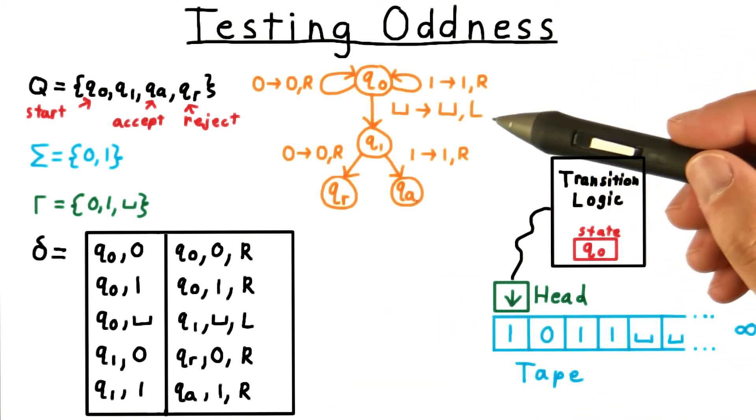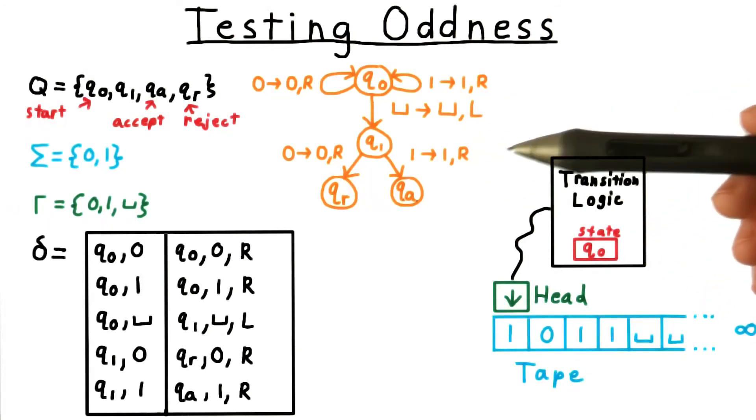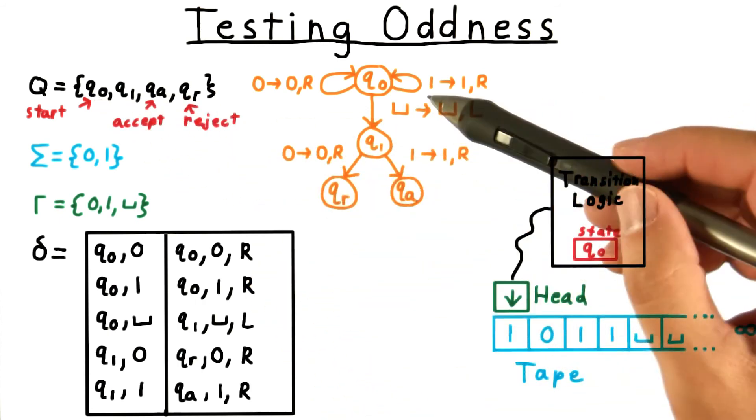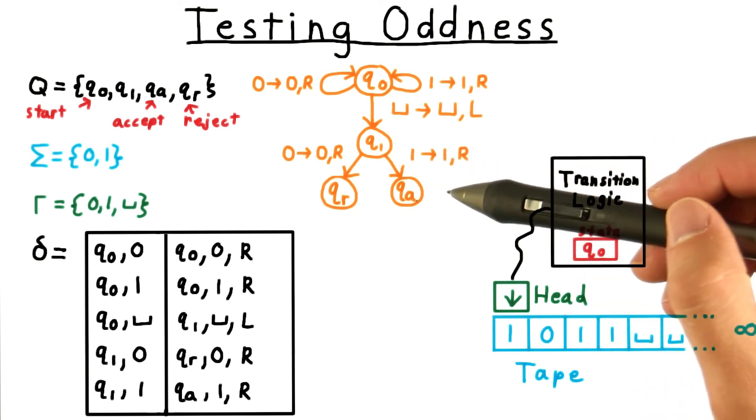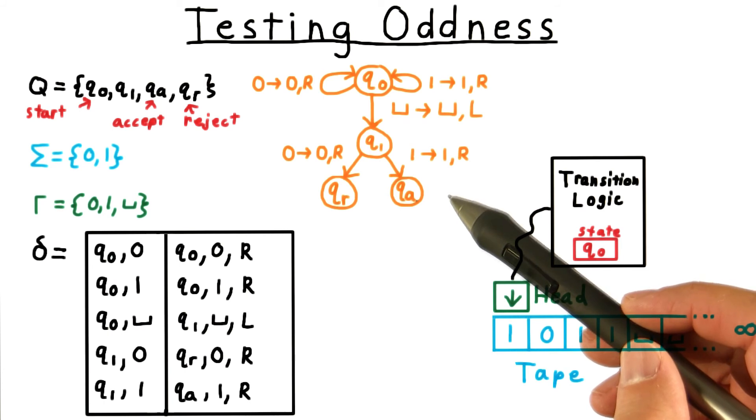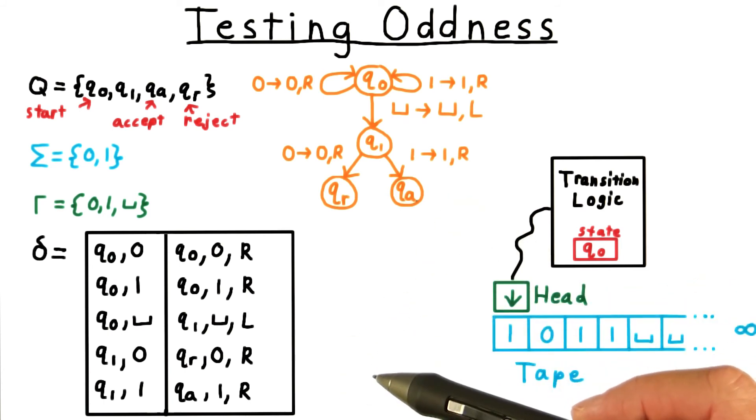One convenient way to represent the transition function, by the way, is with a state diagram, similar to what is often used for finite automata, for those familiar with that model of computation. Each state gets its own vertex in a multigraph, and every row of the transition table is represented as an edge.